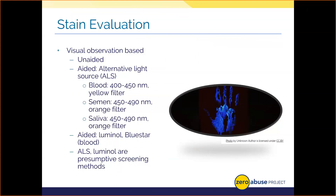There are expensive benchtop ALS models that reach a wide array of spectra, down to portable handheld torches that can be used on scene. The following spectra of light and filters are examples of ALS wavelengths and goggles used to detect body fluids. Note that body fluids are variable in terms of ALS detection — there's a wide range of filters and wavelengths that can be used.